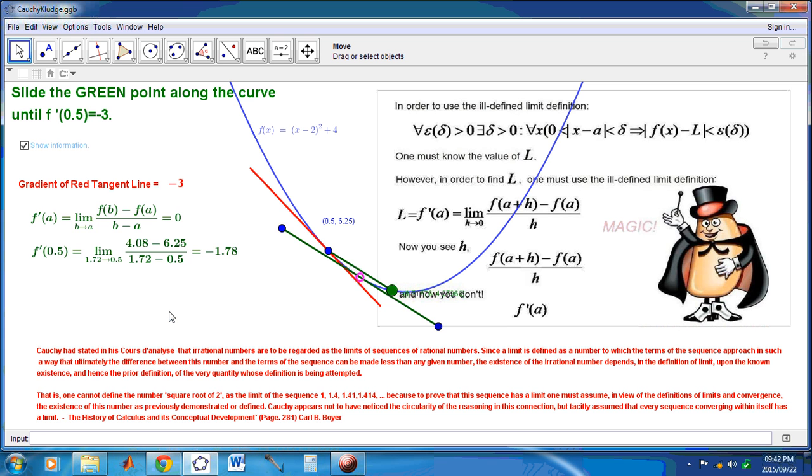In other words, the prior definition is required for the very quantity whose definition is being attempted. And so, the reason for Cauchy's calculus being wrong is that it is defined as a limit. And by the very definition of limits, L here is a limit.